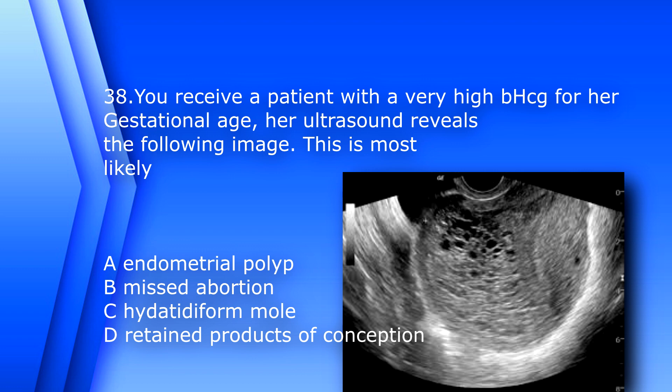Question 38: You receive a patient with a very high beta-hCG for her gestational age; her ultrasound reveals the following image. This is most likely A) an endometrial polyp, B) missed abortion, C) hydatidiform mole, or D) retained products of conception. The answer is C, hydatidiform mole.